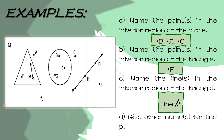Next, give other names for line P. Kung mapapansin nyo, meron tayong line P dito, at sa line P merong dalawang points and those are points H and point D. So bukod daw sa line P, ano pa daw ang pwede natin ipangalan sa line na ito? So pwede natin siyang pangalanan as line DH or line HD. And then yung nasa taas niya, ito yung symbol ng line — kailangan merong magkabilang arrow sa left at right side.